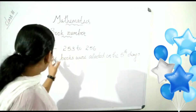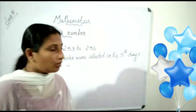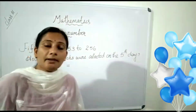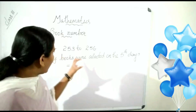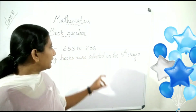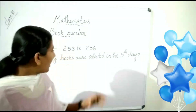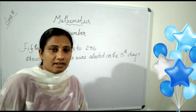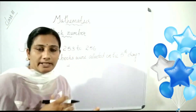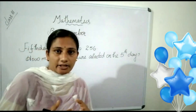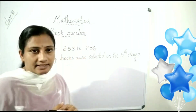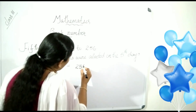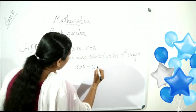Okay. On the 5th day, they collected the books from 253 to 256. Then, on that day, how many books did they collect? How do we find? So, if a question like this — in between how many numbers — we want to find the answer like this. Here, the biggest number is 256. We subtract the small number 253 from big number 256.